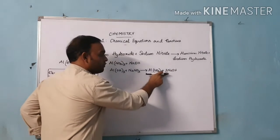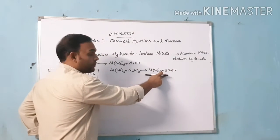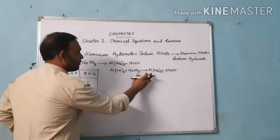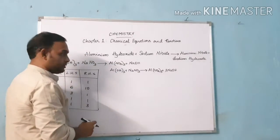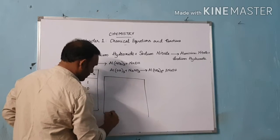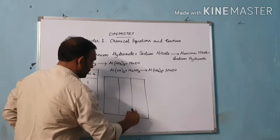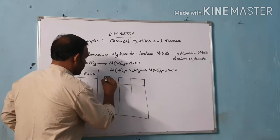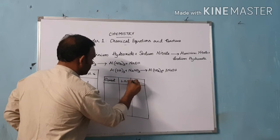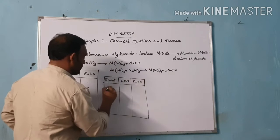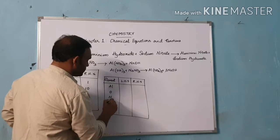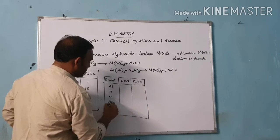Remember, we multiply 3 in front of the compound NaOH. This is our new unbalanced equation. Let us now make a tabulation column based on this equation. The elements in the table are: aluminium, oxygen, hydrogen, sodium, and nitrogen.